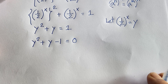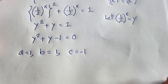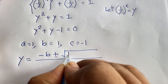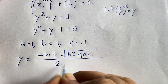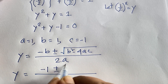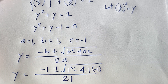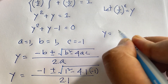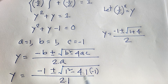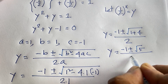Here a = 1, b = 1, and c = -1. Using the quadratic formula: y = (-b ± √(b² - 4ac)) / 2a. Substituting: y = (-1 ± √(1² - 4·1·(-1))) / (2·1), which gives y = (-1 ± √(1 + 4)) / 2, so y = (-1 ± √5) / 2.